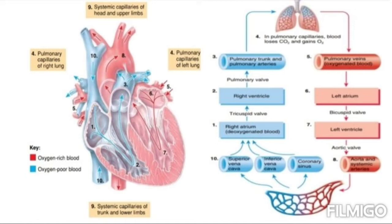The left side of the heart is the pump for systemic circulation. It receives bright red oxygenated blood from the lungs. The left ventricle ejects blood into the aorta, and from the aorta the blood divides into separate streams entering smaller systemic arteries, which carry it to all organs throughout the body except the air sacs of the lungs. These arteries give rise to small arterioles, which finally lead into extensive networks of systemic capillaries.